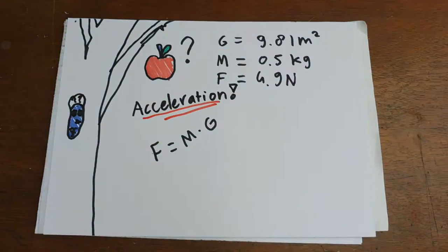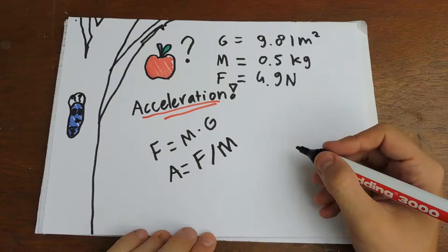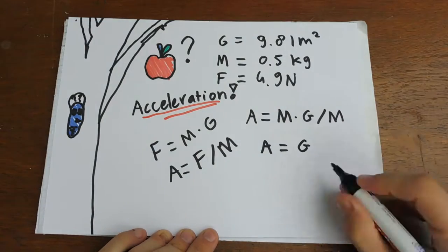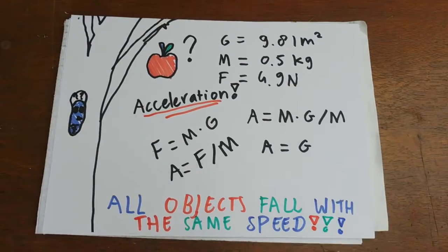So we need to calculate the acceleration. The formula is acceleration is force divided by mass. If we combine these formulas you can see that the mass is in there twice, so we can get the rate of mass.